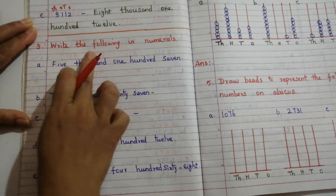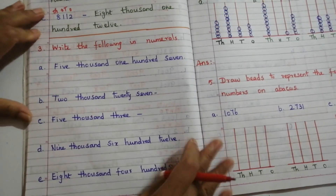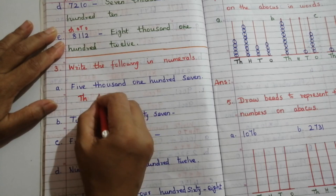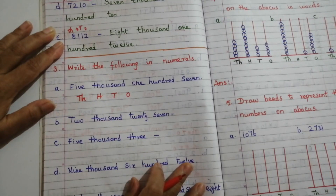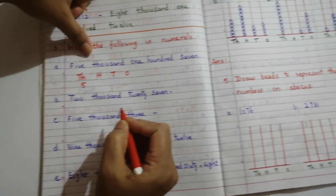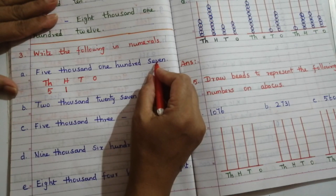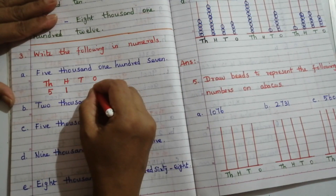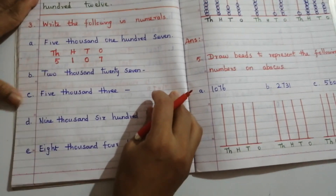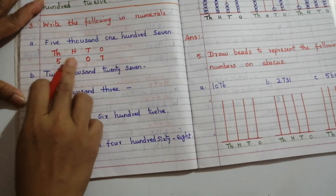Third problem: write the following in numerals. 5107 — first write the columns: thousands, hundreds, tens, ones. 5000 goes under thousands, 1 under hundreds (H), no tens value so write 0 under T, and 7 in ones place. Answer: 5107.